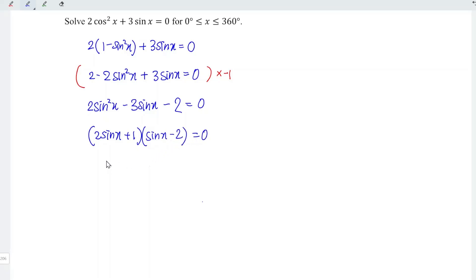Which means that we should have 2 possibilities. Firstly, 2 sine x plus 1 is equal to 0 or sine x minus 2 is equal to 0.